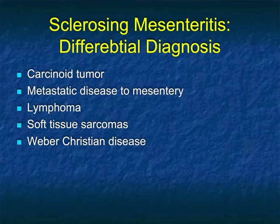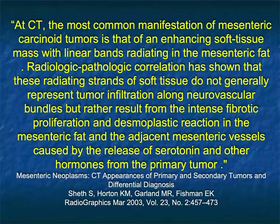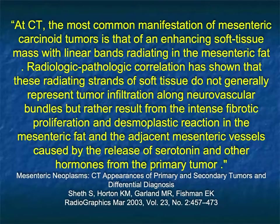The differential diagnosis includes carcinoid tumor, metastasis to the mesentery, lymphoma, soft tissue sarcomas, and Weber Christian disease — with carcinoid tumor at the top. When distinguishing carcinoid from sclerosing mesenteritis, look for the aggressiveness of vessel encasement with carcinoid tumors. Also, carefully examine the small bowel — you may see not only the mesenteric mass but a small bowel primary tumor with carcinoid. Sclerosing mesenteritis does not have an associated small bowel tumor.